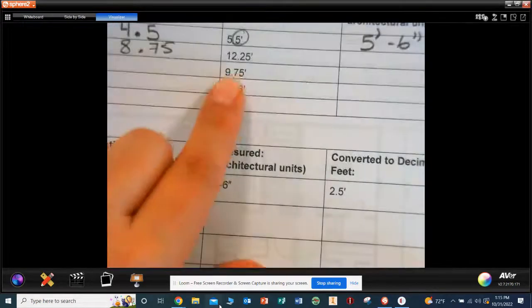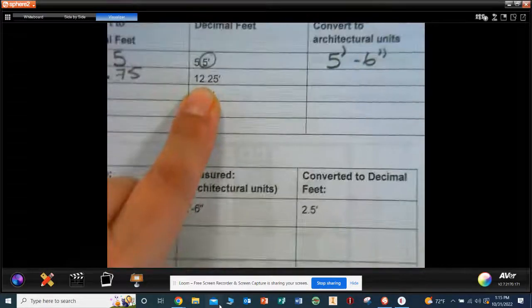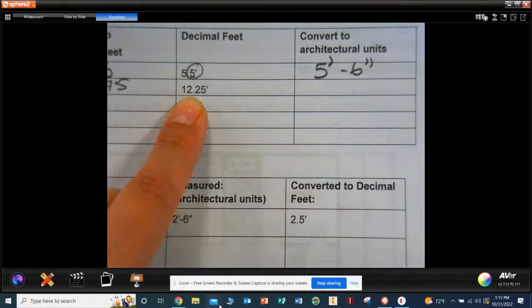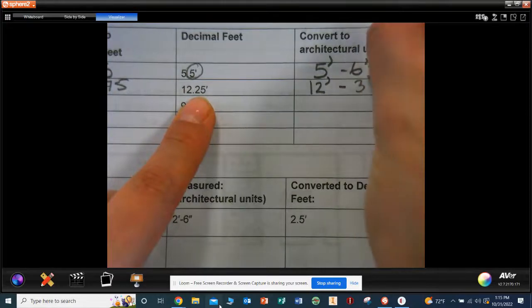So 12.25. How would I write that? 12 apostrophe 0.25. What is 0.25 as inches? So 3 quotation marks.